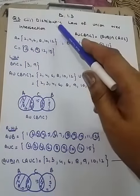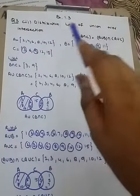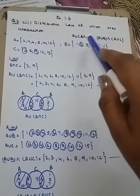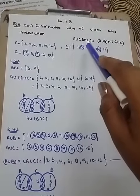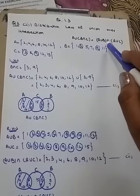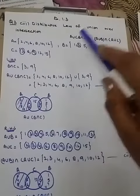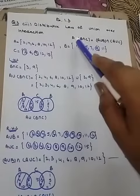Okay students, question number three part three: distributive law of union over intersection. This is distributive property: A union B intersection C is equal to A union B intersection A union C. This intersection will come out and union will go with both B and C.